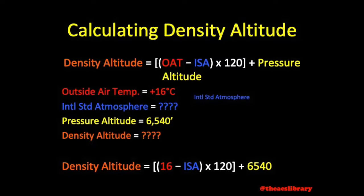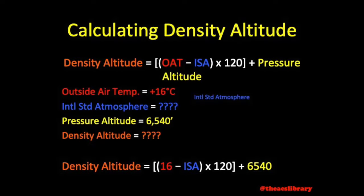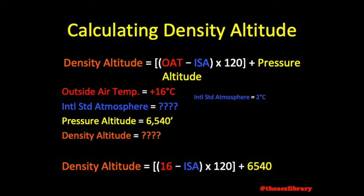Leaving us with our expected outside air temperature, we can plug that value into our equation. The international standard atmosphere value is simply the expected temperature based on lapse rate. At sea level, we expect a temperature of 15 degrees Celsius, decreasing by 2 degrees for every thousand feet we climb. We plan to be at 6,500 feet above sea level. 2 times 6.5 is 13, and after we subtract 13 from 15, we find our expected temperature of 2 degrees Celsius.